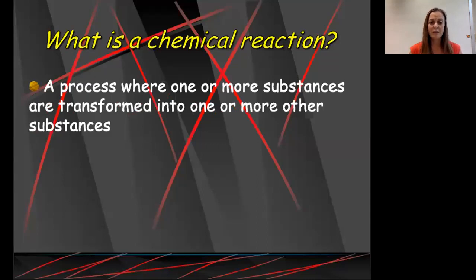So we could have one substance breaking down into multiple substances. We could have multiple substances coming together to make one, or we could have two substances that change into two different substances. There's a lot of different options here, which is why we define it as one or more substances transforming into one or more other substances.